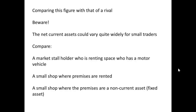Before we compare this figure with a rival, let's stop and think. The net current assets can vary quite widely for small traders. Consider, for example, a market stallholder who is renting space and who has a motor vehicle — the only asset they really have is the motor vehicle plus any inventory. Consider a small shop where premises are rented: there may be no other assets except inventory. And then consider a small shop where the premises are owned — in other words, the premises become a non-current asset or a fixed asset. Obviously, in those three different situations, three businesses have a very different reflection on the balance sheet for their assets.